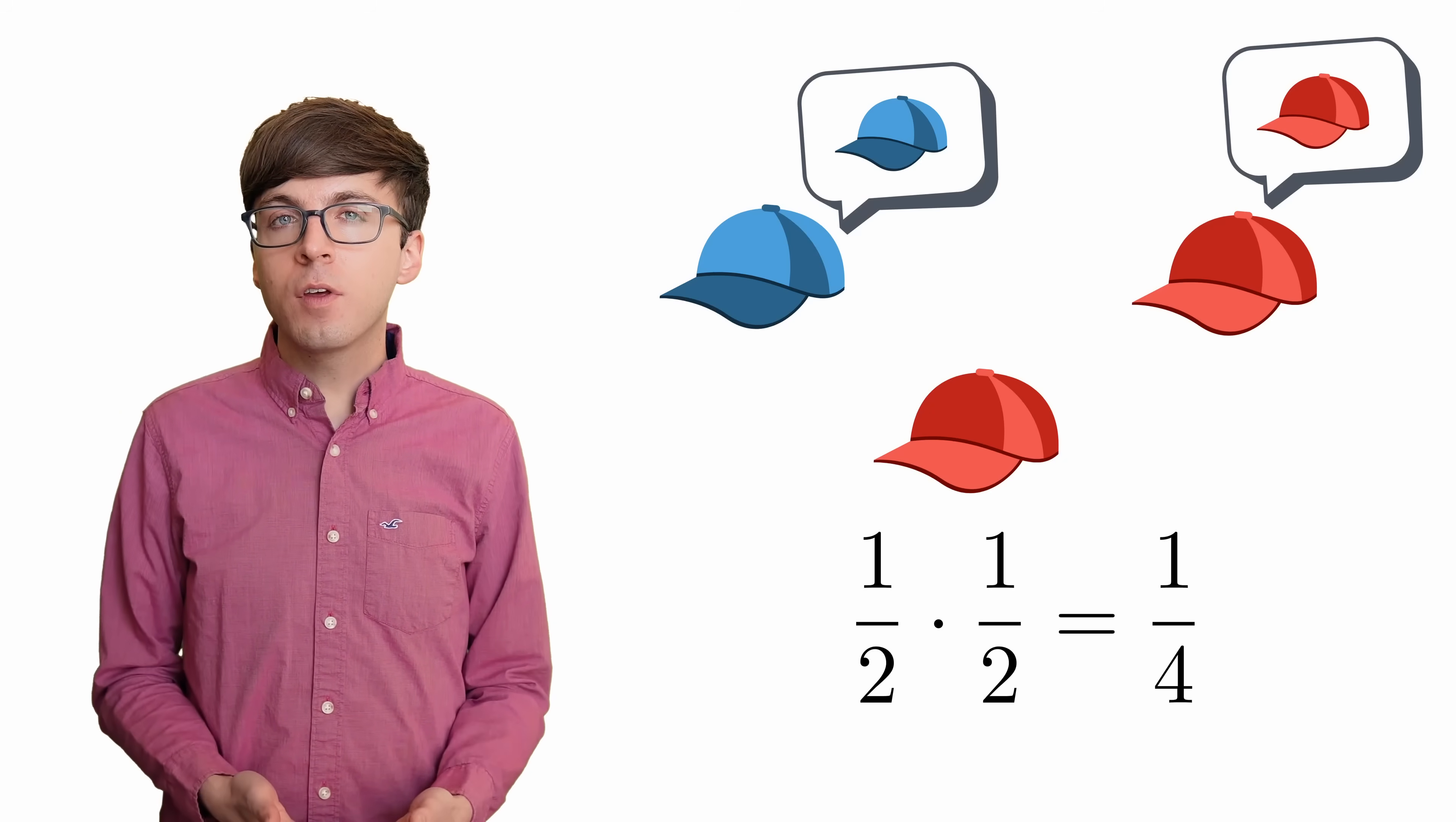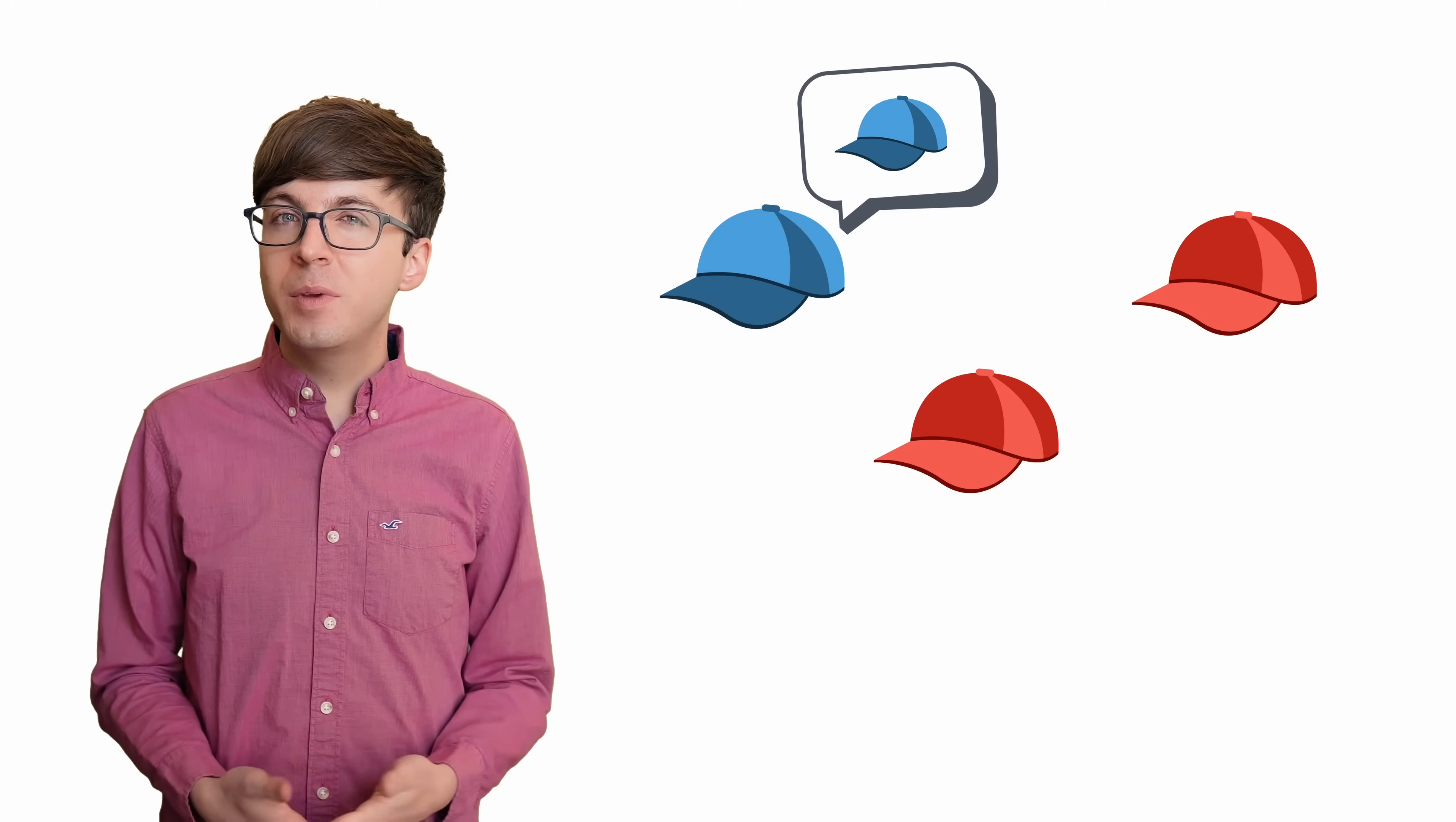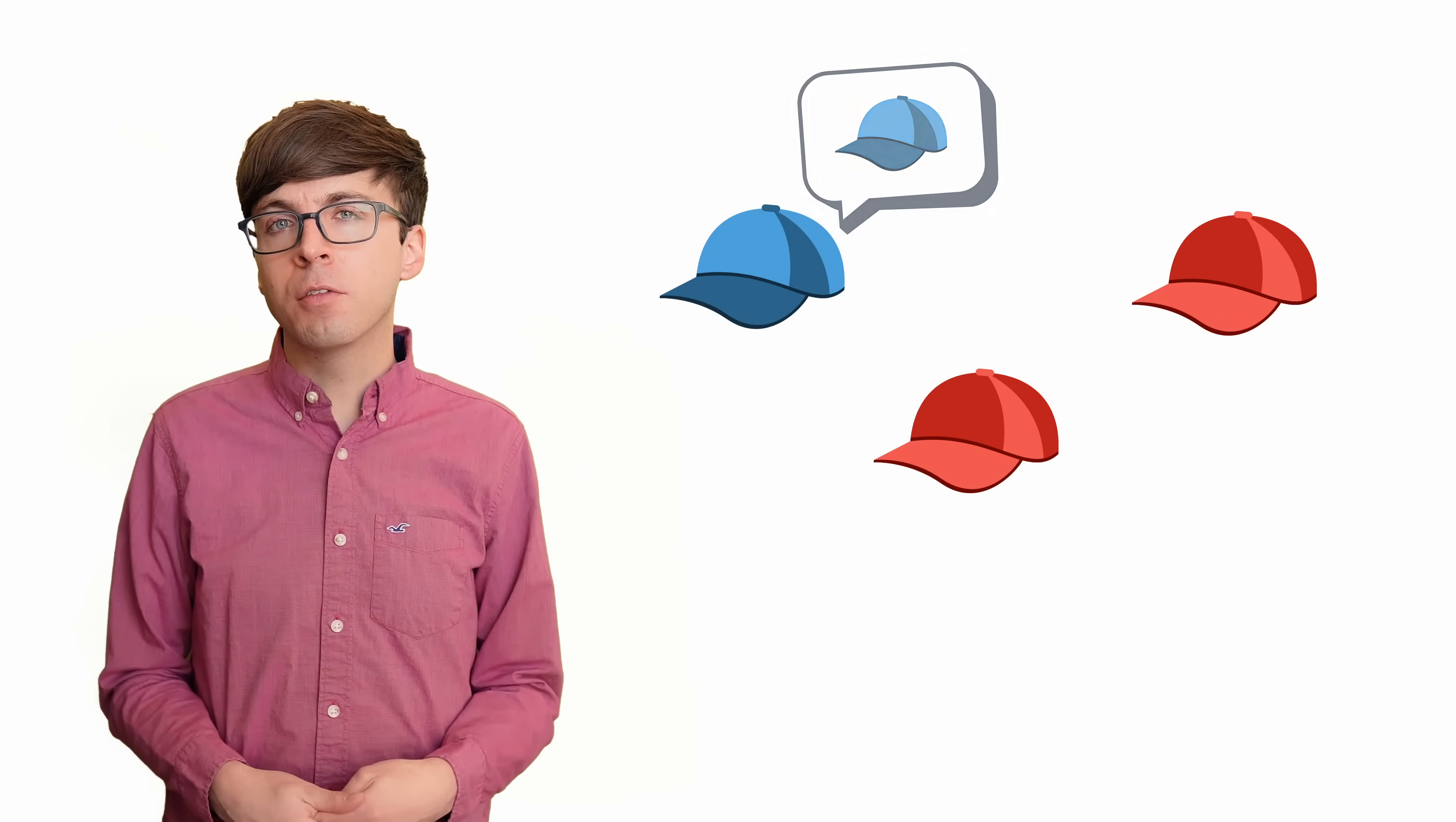So my first thought was that the prisoners should just pick one person to make a guess and have the other two remain silent. This gives them a 50-50 chance of winning the game. I figured there must be another better option, since this was the only question the interviewers were asking me during our 10-minute interview. But it also seems strange to me that it would be possible to do any better than that.